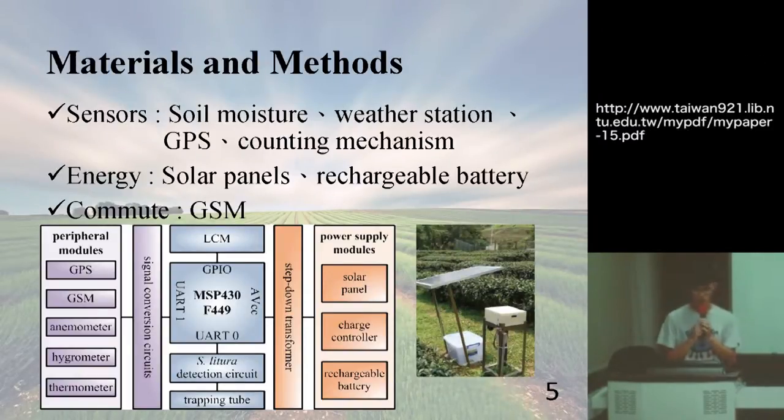So this research is going to put many stations in place in Taiwan. And this station will have some sensors, like the soil moisture and the weather station. You can know the temperature, and they'll have GPS. And most important, they can count the bug in that place. The energy is the solar panels and they'll have a battery. And the most important too, the communication with the center is by GSM.